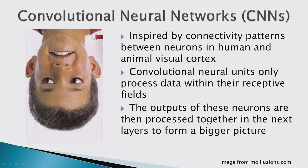What is a convolutional neural network? CNNs are inspired by connectivity patterns between neurons in human and animal visual cortexes. When you perceive an image, you don't perceive it as a whole — certain combinations of neurons look at specific parts of the image. Research going back to the 1950s and 60s confirmed this.